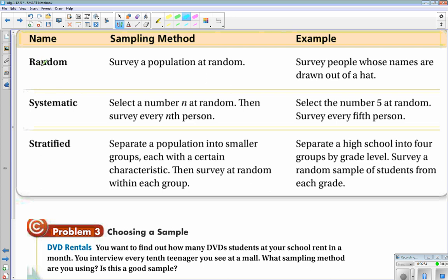We are going to study three different sampling methods. The first one is random. The method that we employ is to survey a population at random. For example, survey people whose names are drawn out of a hat. That would be a random population.